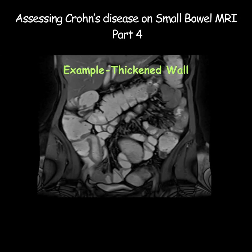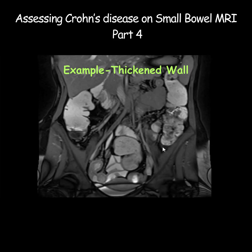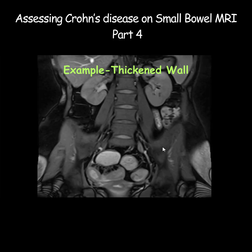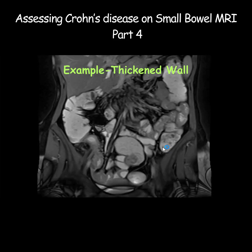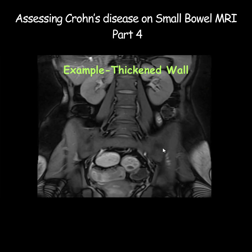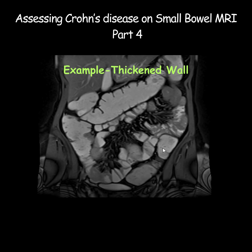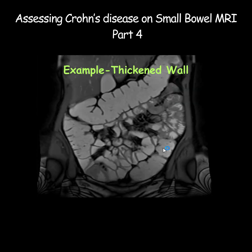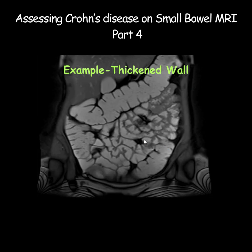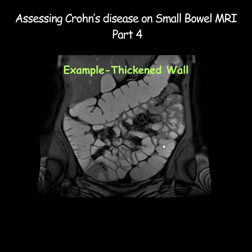Let's look at an example now. This is a T2 fat sat image and I'll scroll through the images. Do you see any abnormality? Well, you can obviously see several small bowel loops and they appear to be adequately distended and show thin walls.